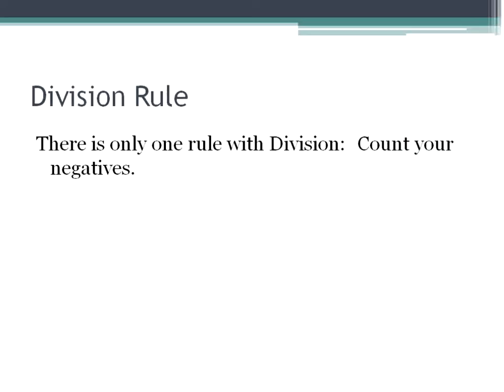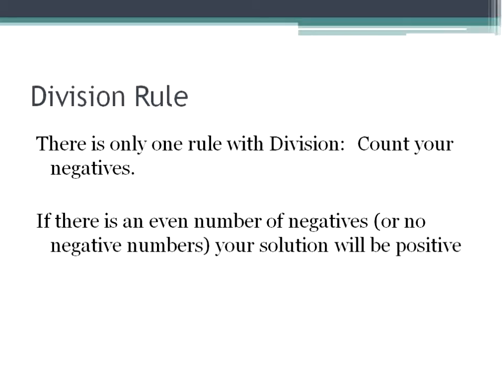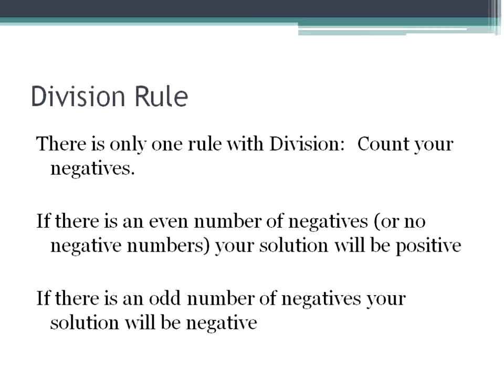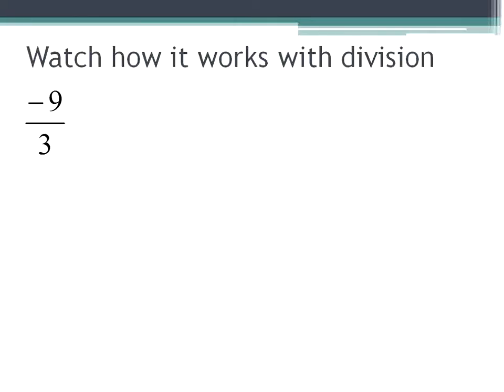The division rule. This may look very familiar. There is only one rule with division: count your negatives. If there is an even number of negatives, or no negative numbers, your solution will be positive. If there is an odd number of negatives, your solution will be negative. It's very similar to the multiplication rule — in fact, it is exactly the same. Multiplying and dividing with negatives is the same thing. Count the number of negatives. Let me show you how it works.